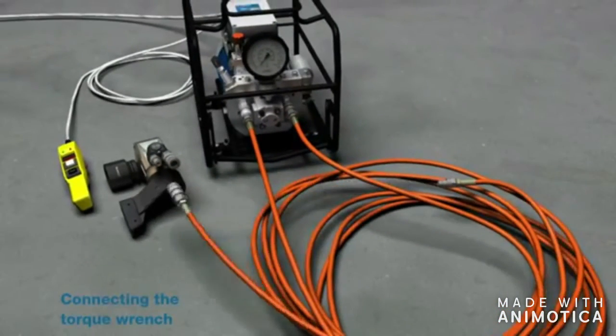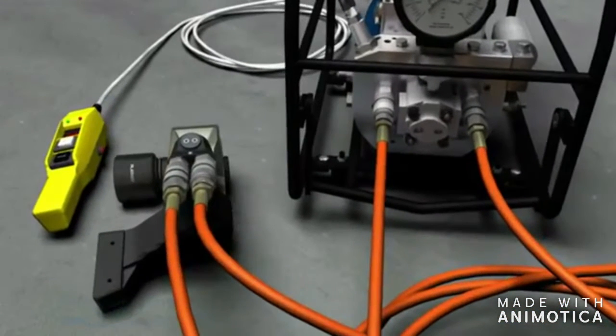Connect the torque wrench to the bled hydraulic hoses. Press the button manual to switch on the hydraulic power pack.